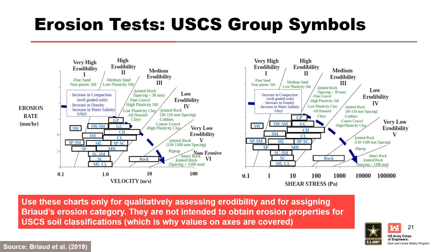Soils with a given USCS group symbol do not fall distinctly into a single erosion category, but rather seem to plot approximately across two categories. These charts are a summary of general observations from the database. However, the positions are very debatable and should not be used to obtain erosion properties. They are useful to help qualitatively assess erodibility, and for assigning Briot's erosion category, which is used in Zhu and Zhang regression equations for estimating embankment dam breach parameters, which will be discussed later in a separate presentation.